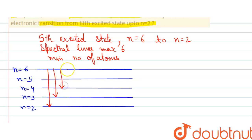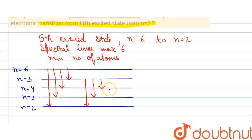For n equals to four or n equals to five: if the electron of an atom is present in n equals to five, it can move to n equals to two, then three, and then four. If the electron is present in n equals to four, then it can move to n equals to two and n equals to three.